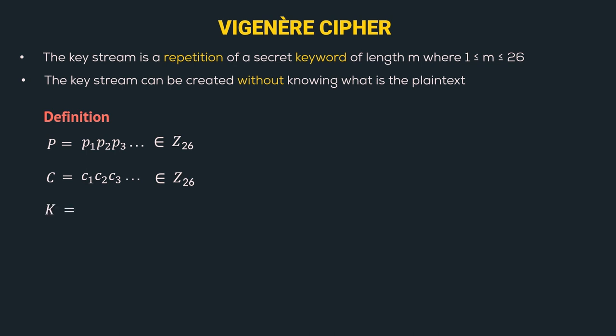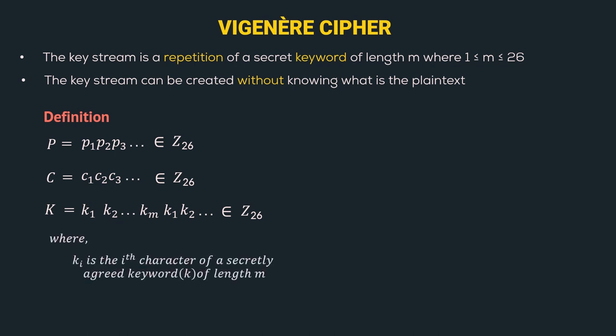Now let's look at the definition of the key. The key starts from K1, K2, and so on till Km, and again starts from K1, K2, and goes on. The domain is also Z26. Ki represents the ith character of the secretly agreed keyword of length m. The key stream is generated by simply repeating the keyword.